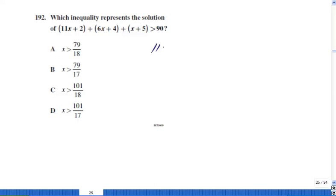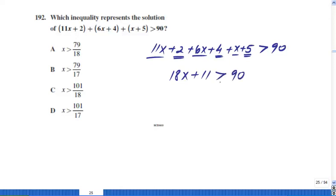Your inequality would be 11x + 2 + 6x + 4 + x + 5 greater than 90. Combine your like terms. 11x plus 6x plus x is going to be 17x plus x, 18x. Combine your free terms. 2 plus 4 is 6, plus 5 is going to be plus 11, greater than 90.